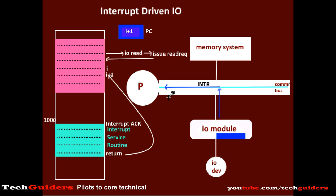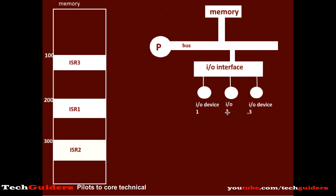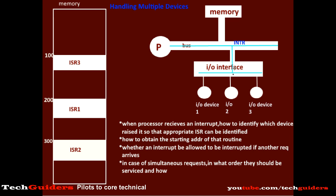In the last video we discussed a normal interrupt flow considering a single I/O device and a corresponding interrupt service routine for it. But usually there will be multiple I/O devices and a separate interrupt service routine for each. Thus handling multiple I/O devices means handling multiple interrupts, which involve many factors to be considered. Usually all the devices are connected to a common interrupt request line. So if the processor receives an interrupt, how will it identify which device has raised the interrupt, so that it can identify the appropriate interrupt service routine to be executed?